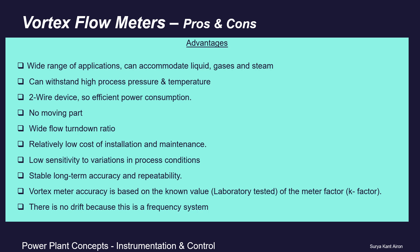Vortex meter accuracy is based on a known K-factor, where F = K × V — the frequency of vortex generation equals the K-factor constant multiplied by fluid velocity. This K-factor for each instrument is calculated and tested in the laboratory and is marked on the instrument nameplate. There is no drift because this is a frequency-based system.